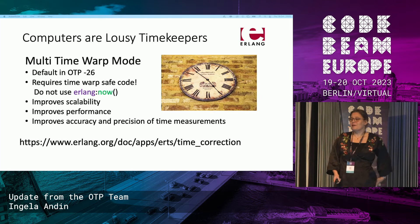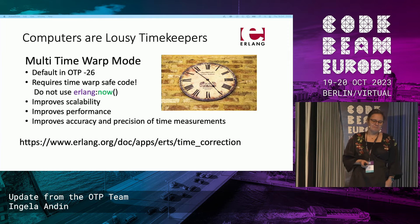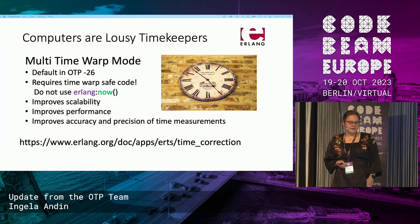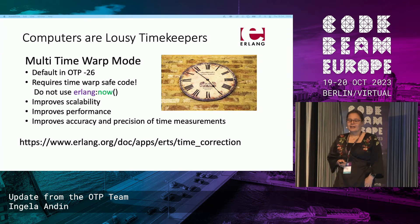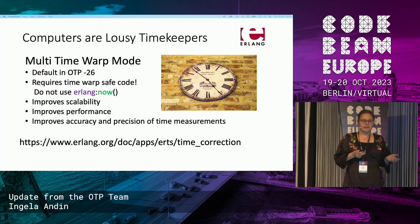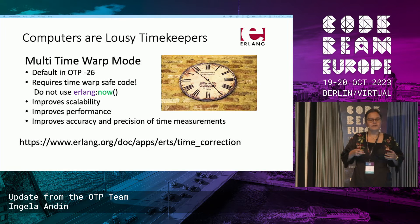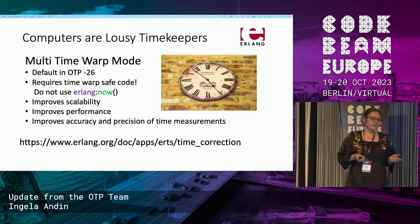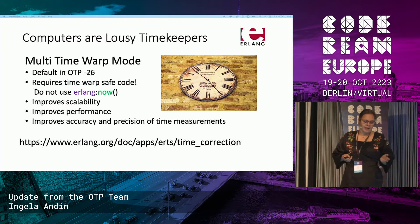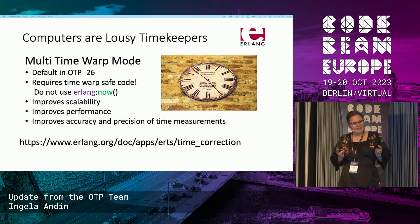Computers are good at many things, but keeping wall clock time is just not one of them. Due to legacy, we have several time warp modes to handle time corrections more or less adequately. Because when providing soft real-time properties, such as Erlang does, keeping accurate time is really important. Finally, in OTP 26, the best time warp mode is made the default.